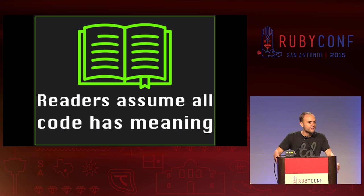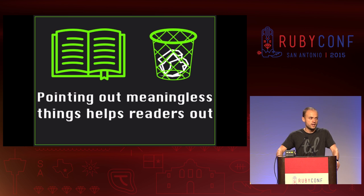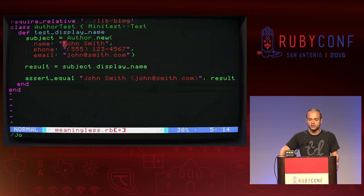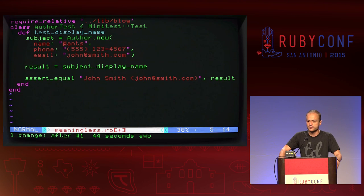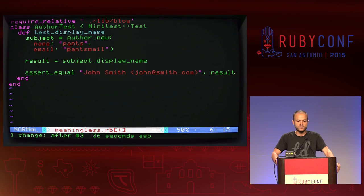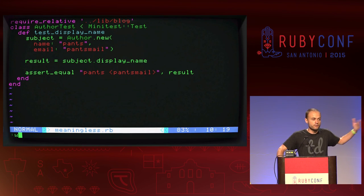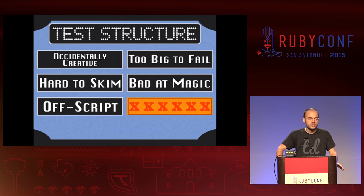Readers assume all of our code has meaning. But especially in testing, very often the stuff we put in our tests is just plumbing to make our code execute properly. I try to point out meaningless stuff to help my reader out — I make unimportant test code look obviously silly and meaningless. For instance, if I'm setting up a new author object with a fancy name and phone number and email that aren't necessary for this method, I'll just change his name to 'pants,' remove his phone number, change his email to 'pants mail.' Now everyone in the room understands you didn't need a real author. Test data should be minimal, but also minimally meaningful. We're through section one — test structure. Let's move on to round two: test isolation.